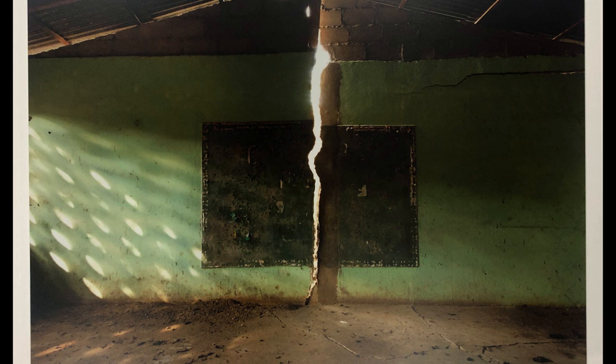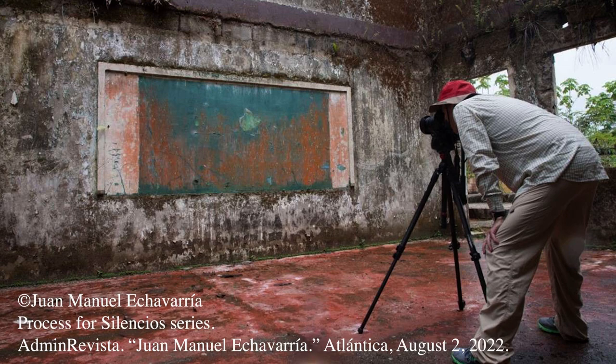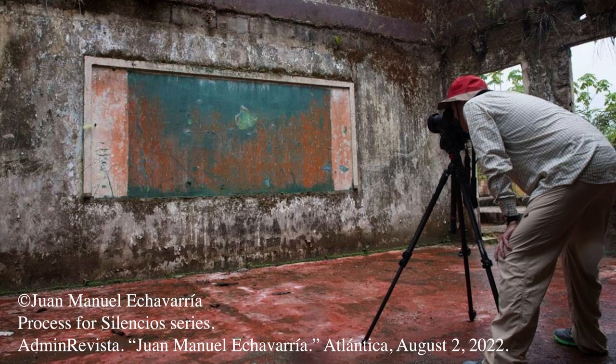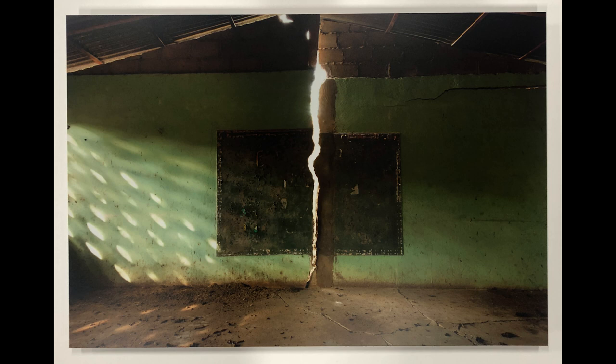Juan Manuel Echeverria was born in Medellín, Colombia in 1947. Before he became a photographer, he was a fiction author who was fascinated by escaping the real world through imagination. He was inspired by artists in New York to try his hand at photography, and he became very interested in documenting the history and present of his home country, Colombia. In much of his work, he centers the stories of witnesses and survivors of the conflict there, bringing to light a situation that is often contained to the country and that many people outside of it are unaware of.